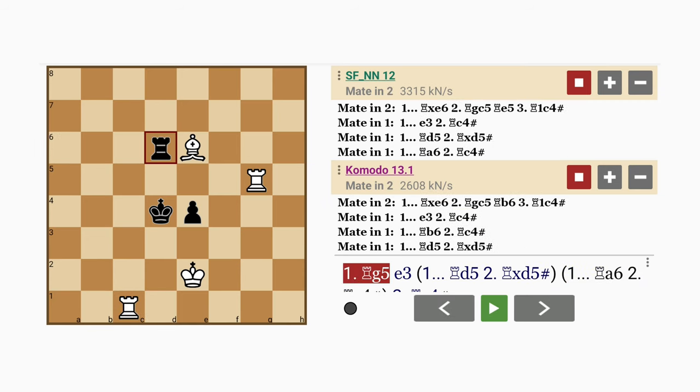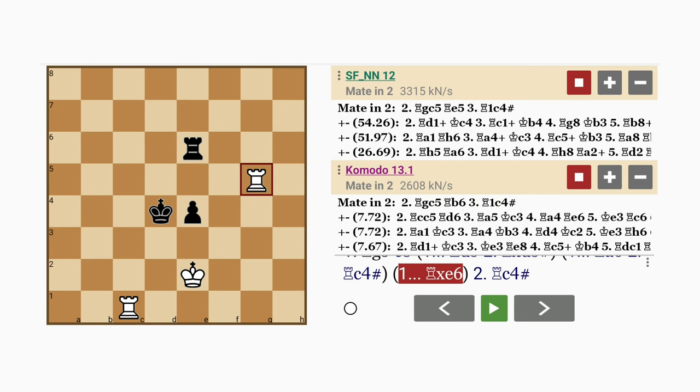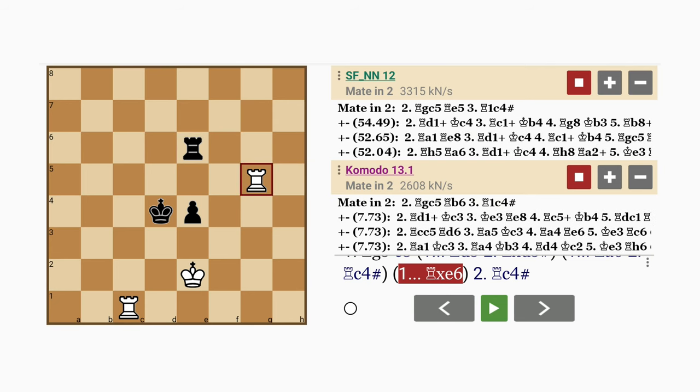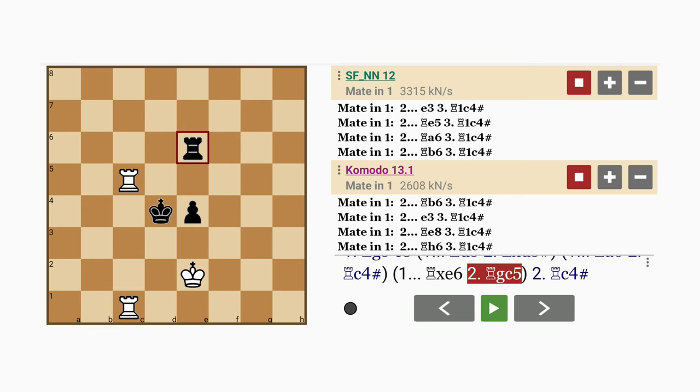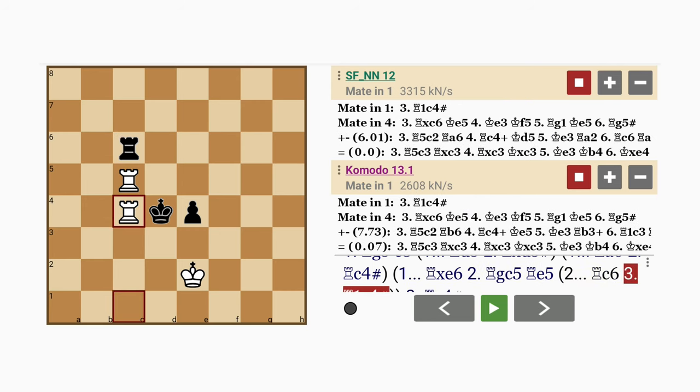So basically white gives up the bishop and it would be prudent for black to capture it. And here interestingly, rook on the g file, the same one that just moved, moves again to c5.